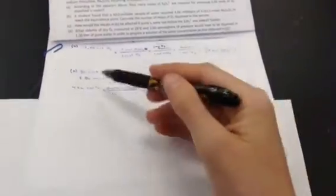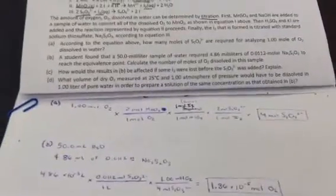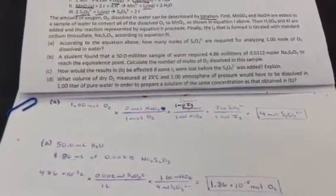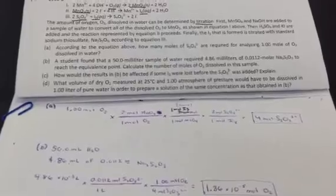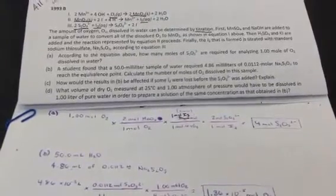I'll take a picture of this and put it up after. There's that answer. So, we used volume and concentration, multiply that to get moles, and use that mole ratio we came up with up here. Next, letter C. We want to know how the results in B would be affected if some iodine were lost before the thiosulfate was added.